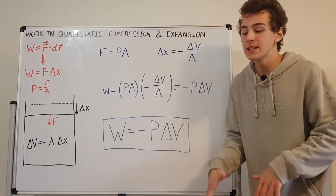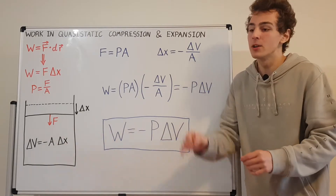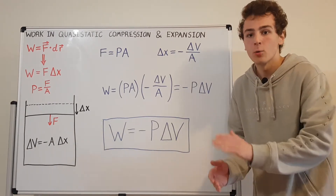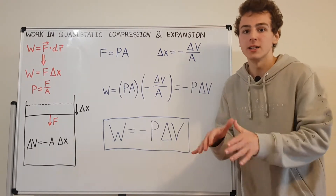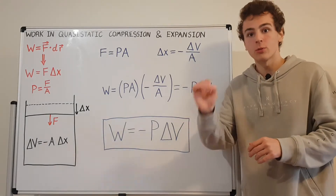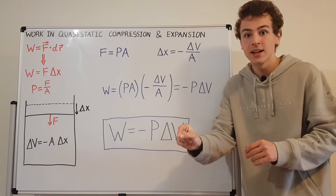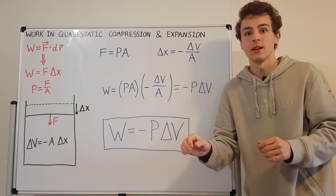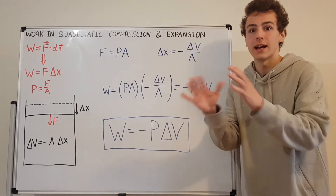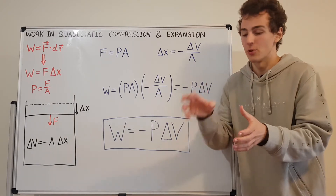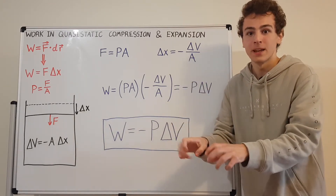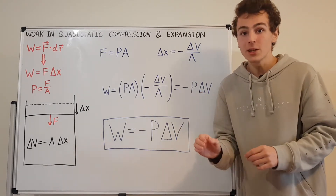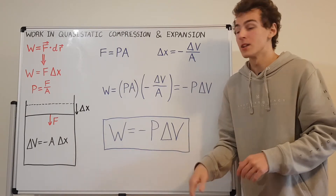Quasi-static means that all the relevant macroscopic quantities are defined throughout the entire duration of the process. There are no abrupt jumps where the pressure, temperature, or volume are undefined. That means if you assign a pressure, volume, or temperature to that gas, every point inside that gas has that attribute — that quantity is evenly distributed throughout the entire gas. You can treat the gas as one big clump, where every part of the gas is identical. This approximation isn't 100% true, but for macroscopic purposes it gets us very far.